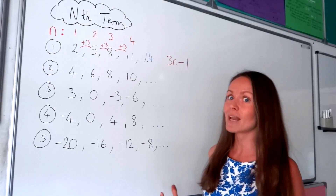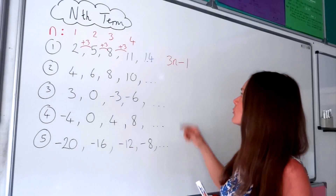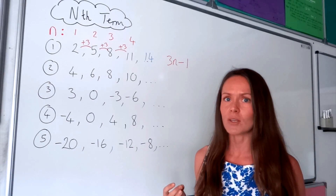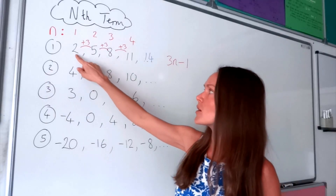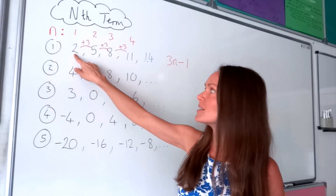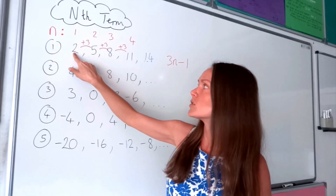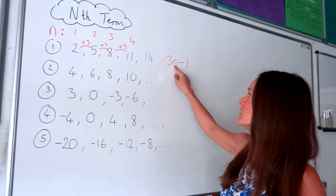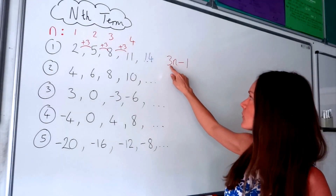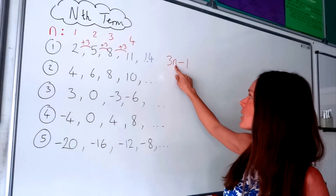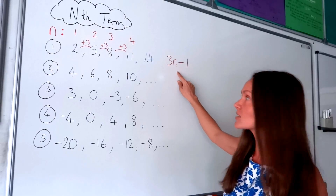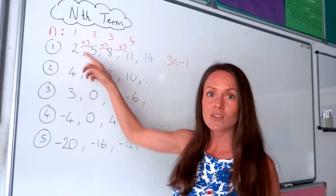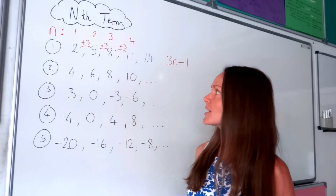Let me explain why that works. Remember, n is the position of the number. Let's take the first number in this sequence — this is when n is 1. If we put n equal to 1 in this formula, 3 multiplied by 1 is 3, and if I subtract 1, I get 2. So that generates the first number in this sequence.